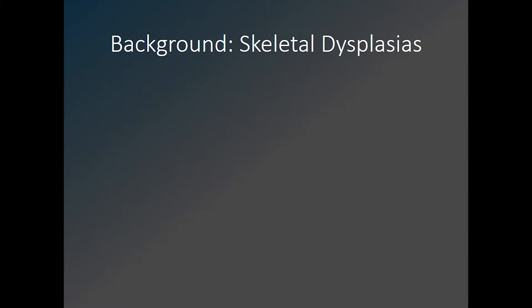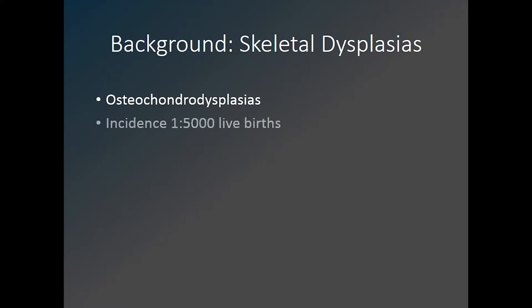Skeletal dysplasias can be considered generalized disorders of the bones and cartilage, also referred to as osteochondral dysplasias. Many have other clinical and molecular or genetic abnormalities in addition to the radiographic abnormalities. Their overall incidence is approximately 1 in 5,000 live births. In contrast, a dysostosis refers to a problem that occurs during blastogenesis in the first six weeks of fetal life, which may result in abnormal bone formation but only in the affected bone or group of bones.